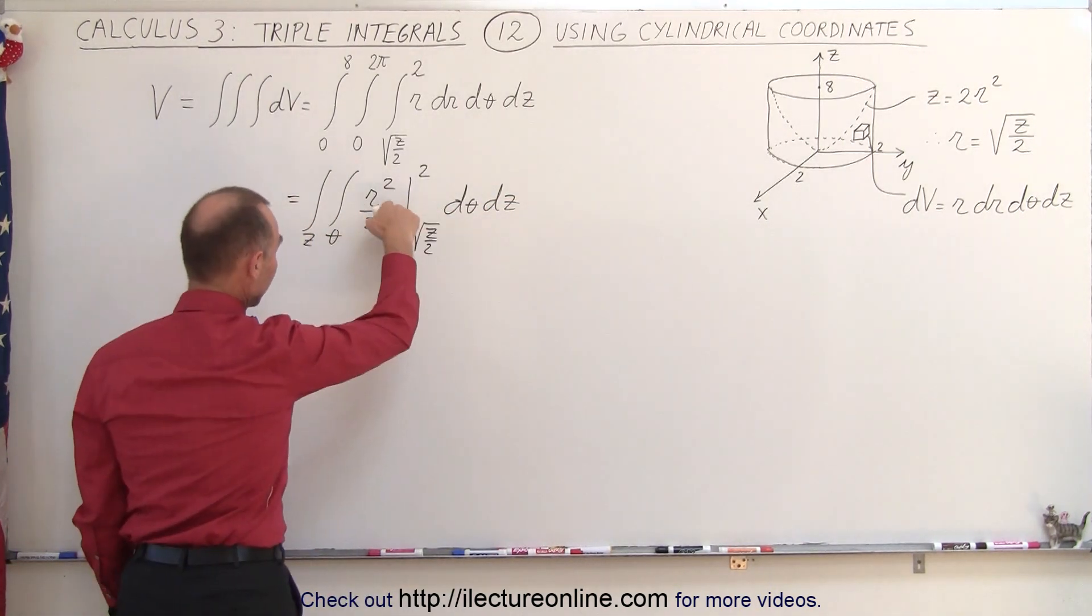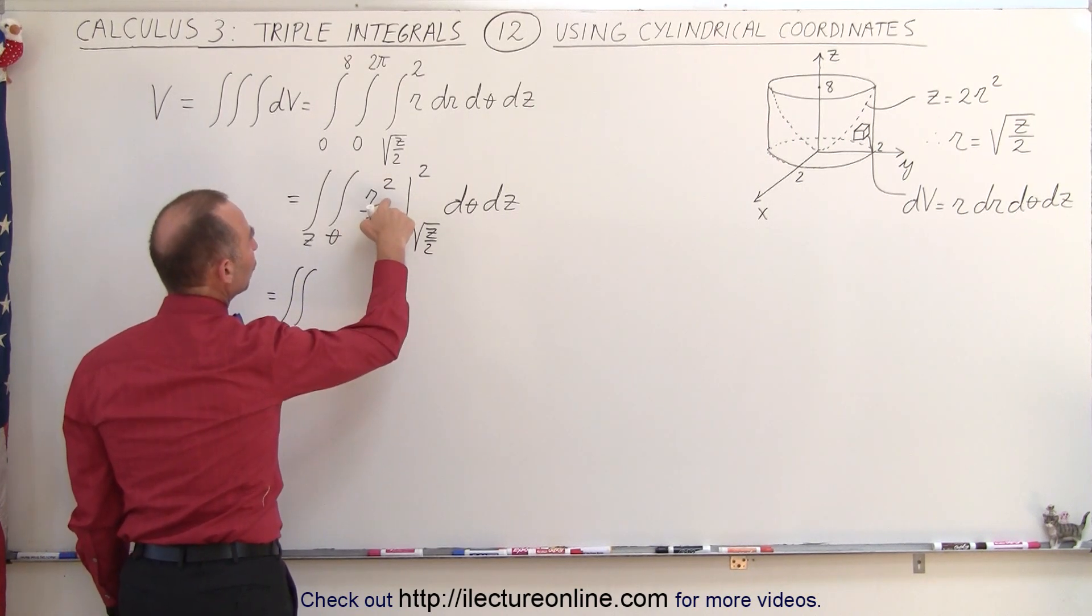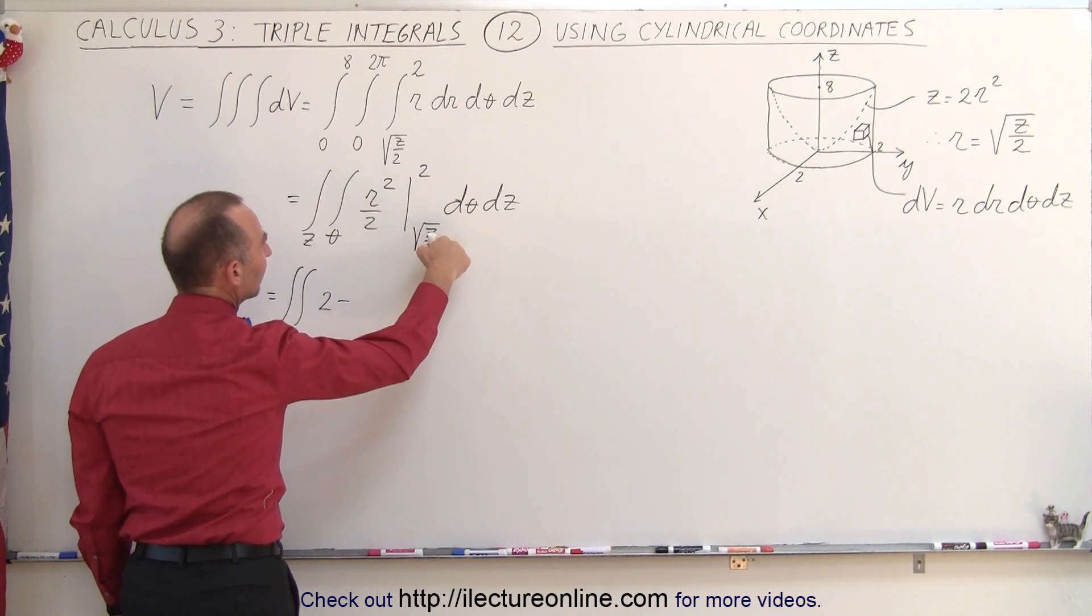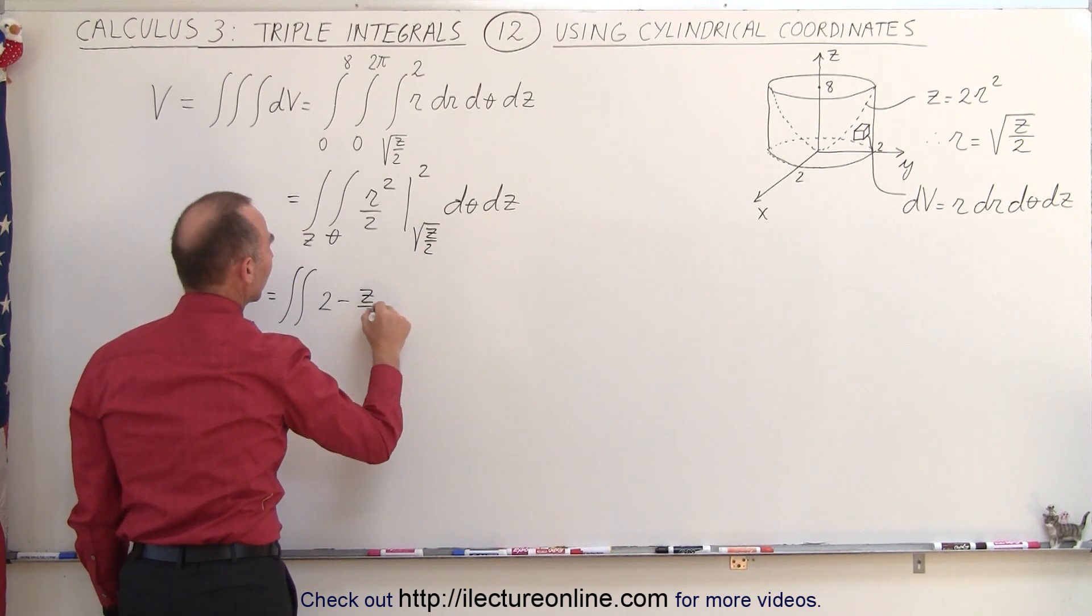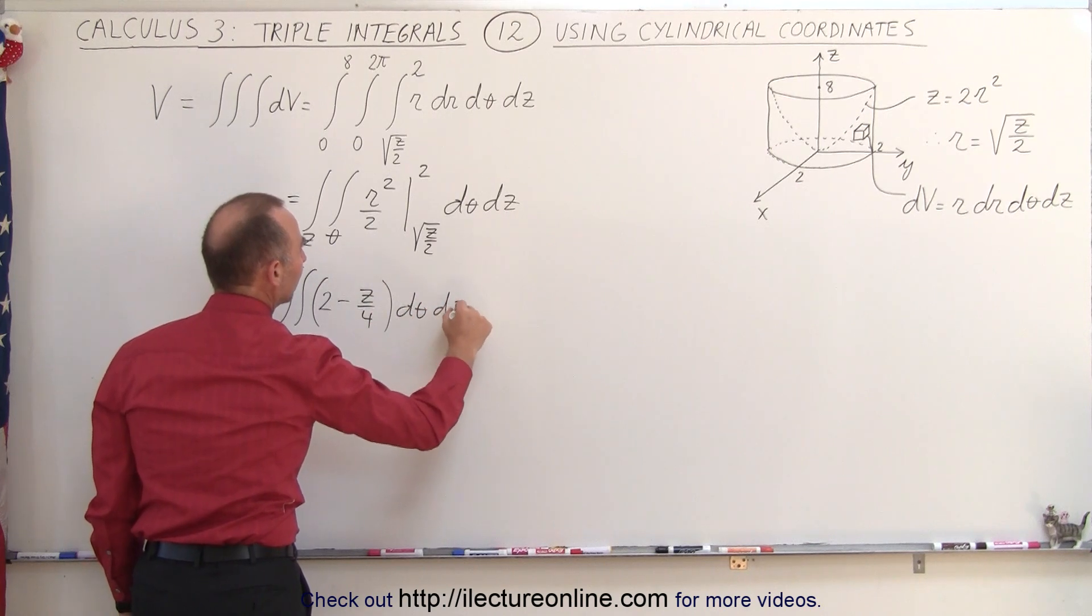So now, when we plug in the upper limit, this is equal to 2 squared, which is 4 divided by 2, which is 2 minus, when we plug in the lower limit, this quantity squared is z over 2 divided by 2, which would be z divided by 4, and then we still have dθ and dz.